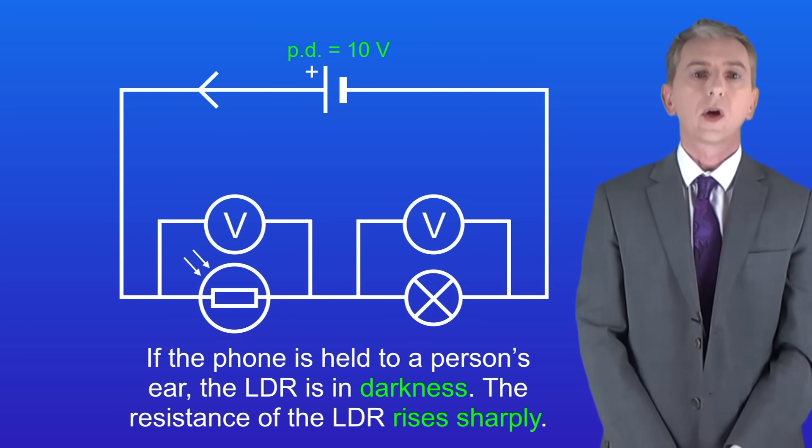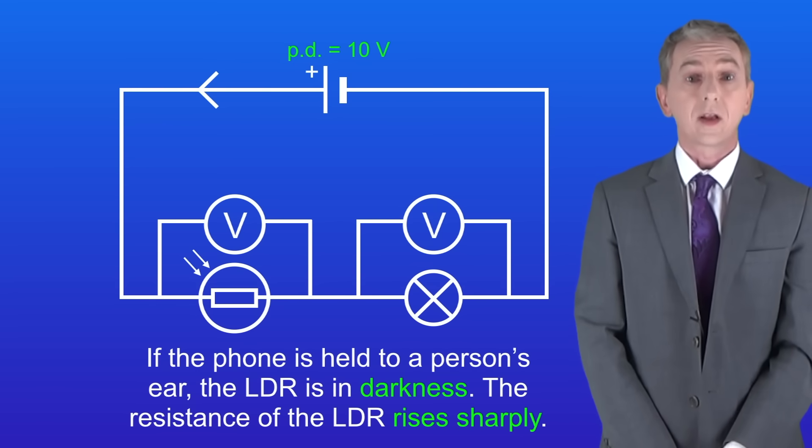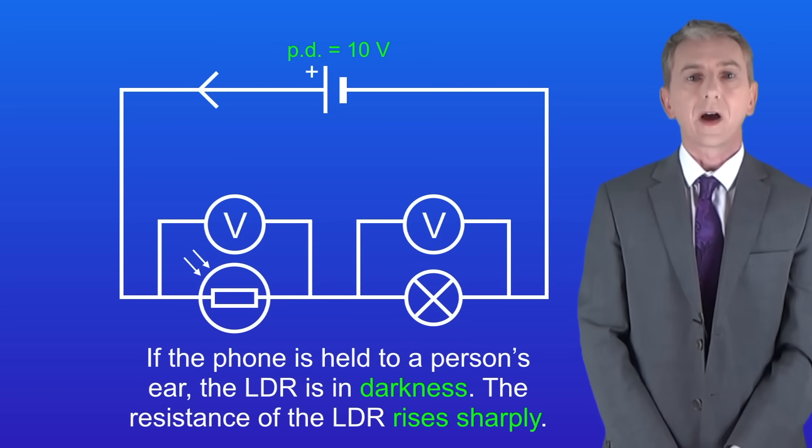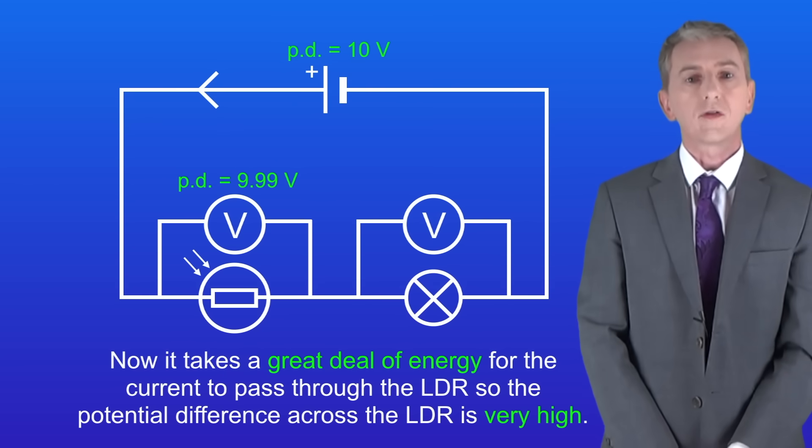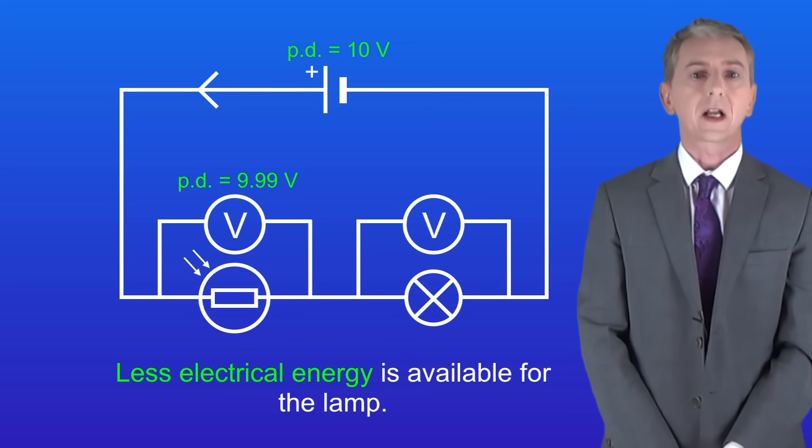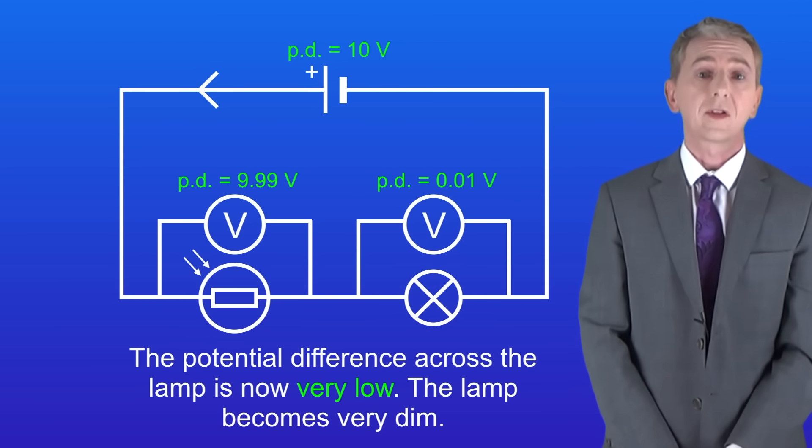If the phone is held to a person's ear, then the LDR is now virtually in darkness. The resistance of the LDR rises sharply. Now it takes a great deal of energy for the current to pass through the LDR. So the potential difference across the LDR is very high. This means that less electrical energy is available for the lamp. The potential difference across the lamp is now very low and the lamp becomes very dim. This turns the screen off.